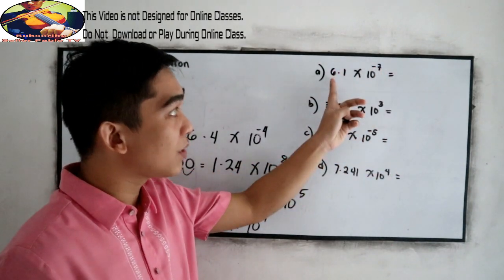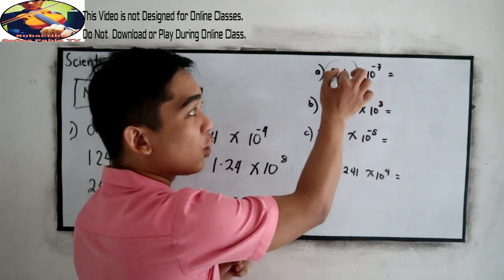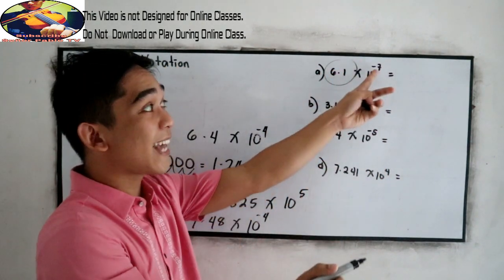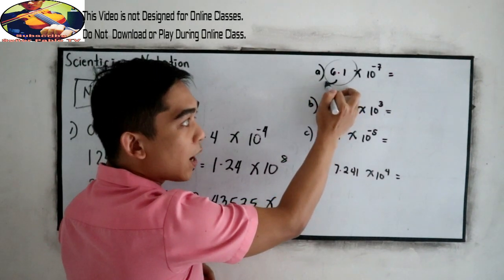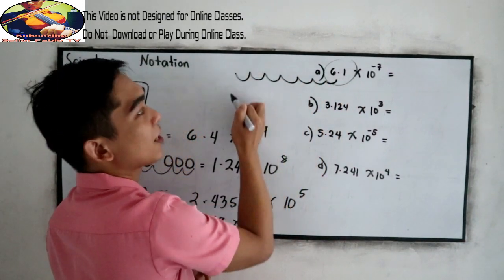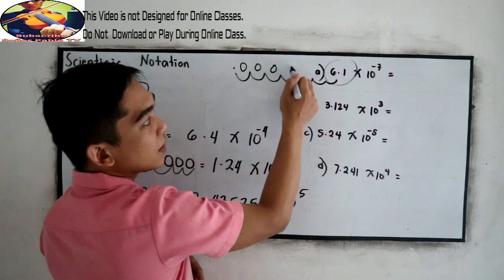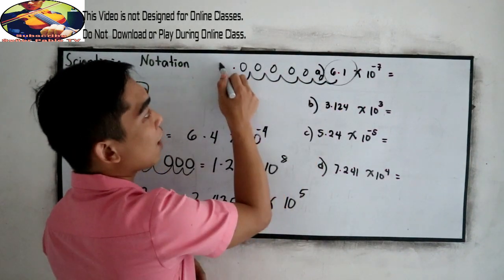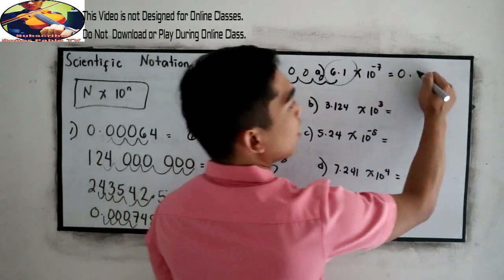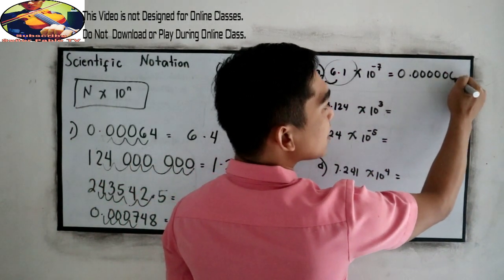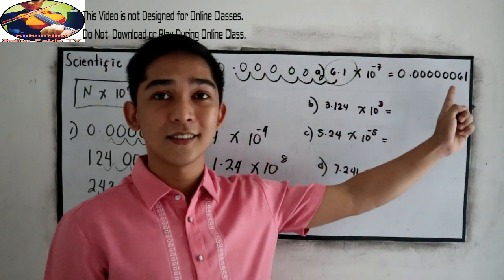So this is raised to negative 7 - that means we know that the value of this is least. So we're going to move to the left 7 times. So move 7 times, starting from the decimal point: 1, 2, 3, 4, 5, 6, 7. Then put period. Then fill the following into zeros. So that will become 0 point, 1, 2, 3, 4, 5, 6 zeros. Then copy 61. This will be the decimal form.